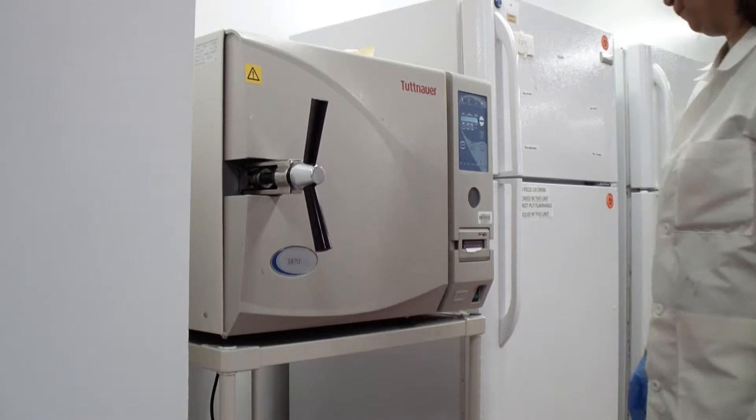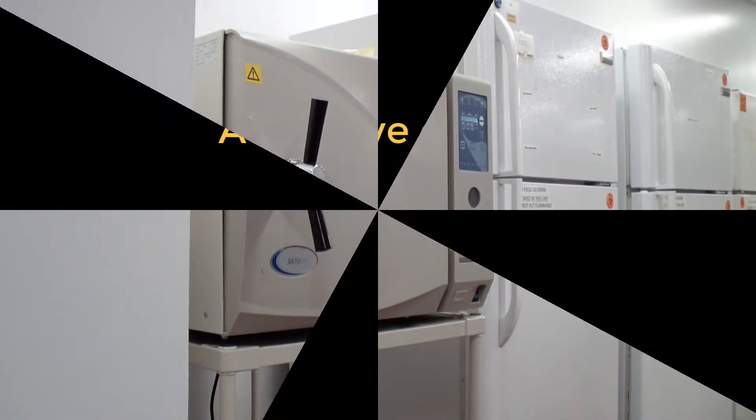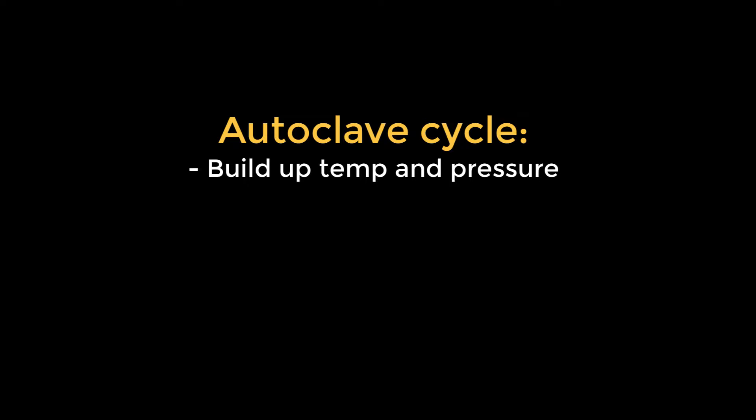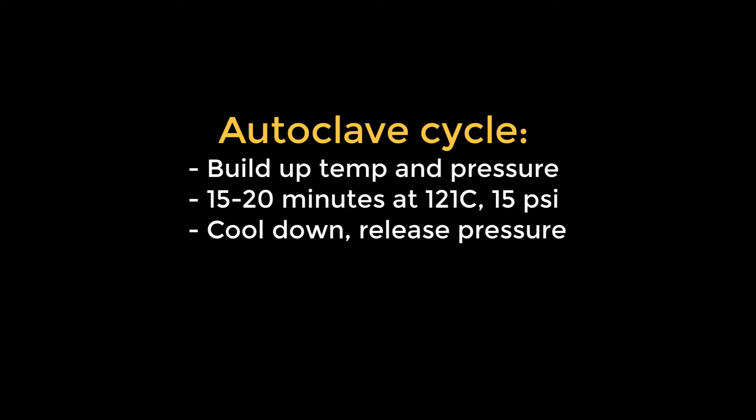Then the autoclave is started. It takes about an hour and 15 minutes for one complete cycle of building up pressure, 15 to 20 minutes at 120 degrees Celsius, 250 degrees Fahrenheit at 15 psi, and slowly decreasing the pressure again.